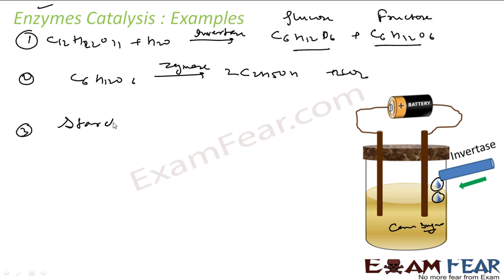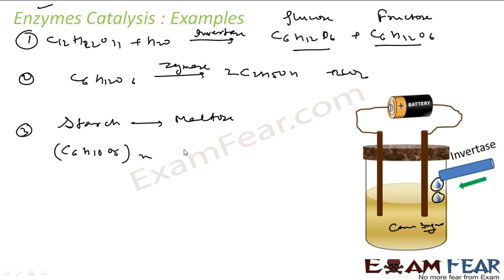The next example is starch. You want to convert starch — C6H10O5n — into maltose. Using some water and the enzyme diastase, the starch is converted into maltose.